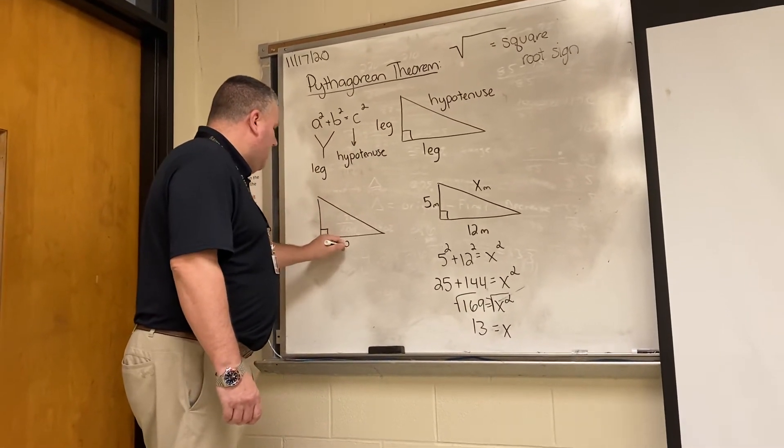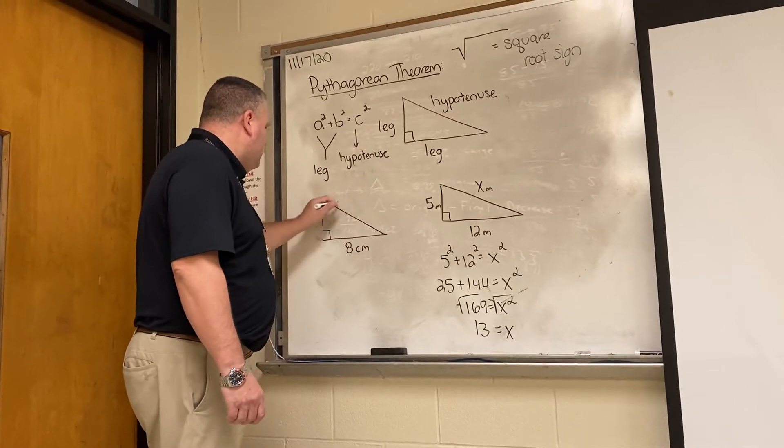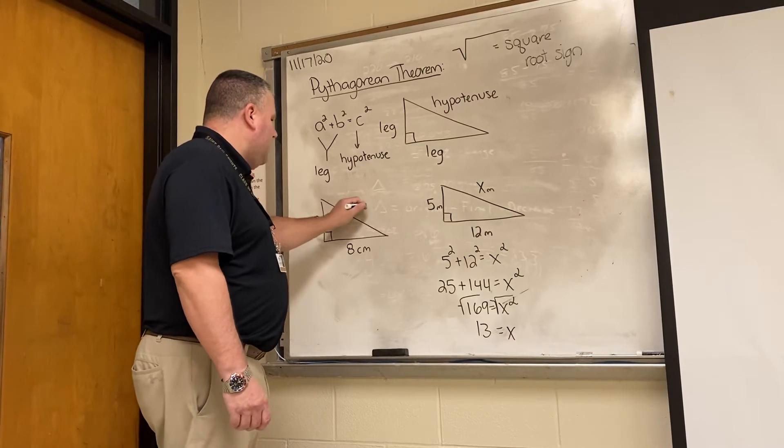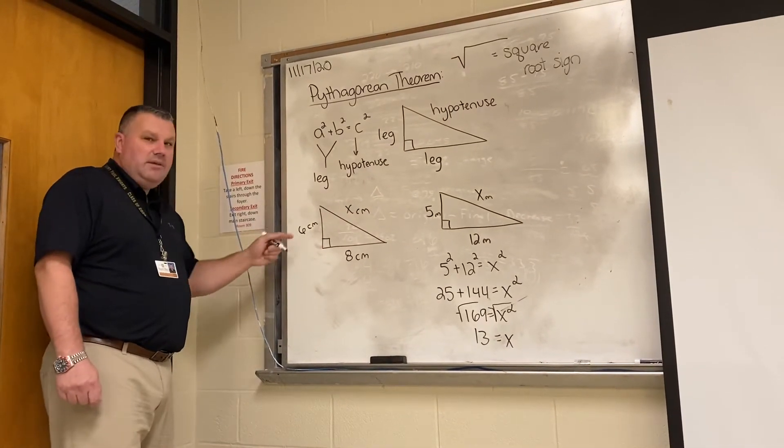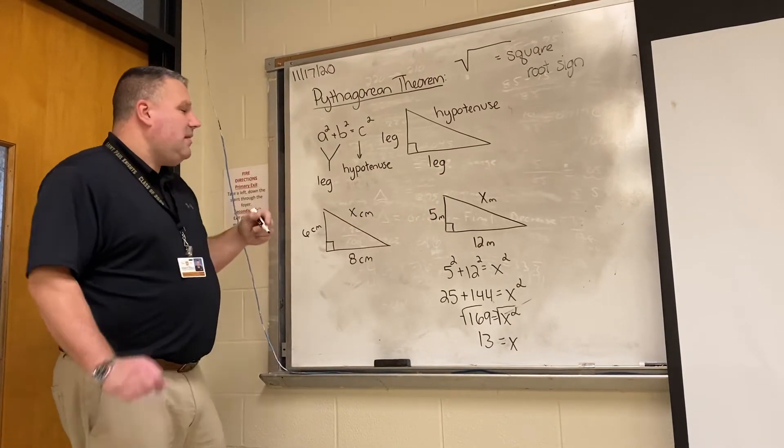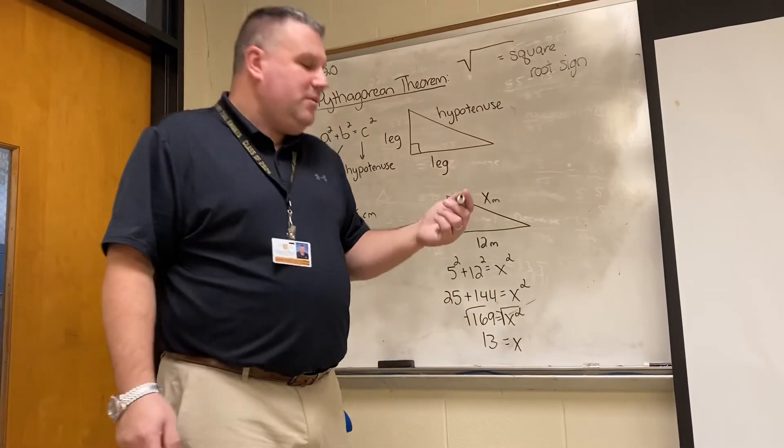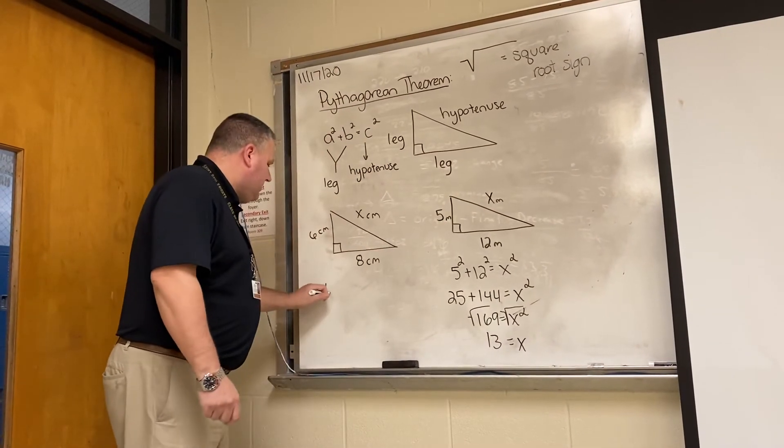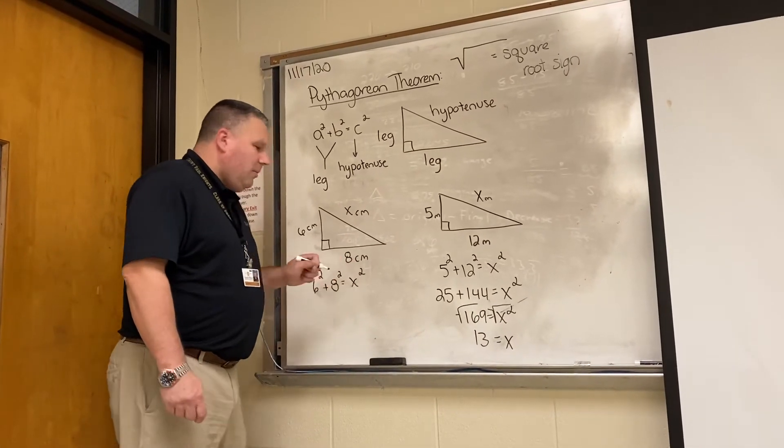Again, this is going to be a right triangle. You know two out of the three sides. I'm looking for the third side. The Pythagorean theorem states the sum of the sides squared is equal to the hypotenuse squared. So it is 6 squared plus 8 squared is equal to x squared.